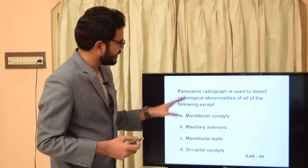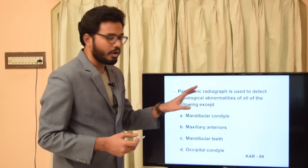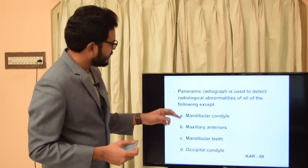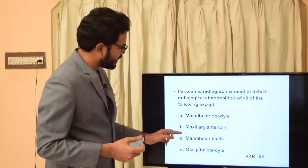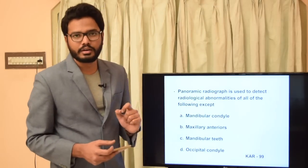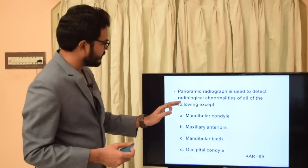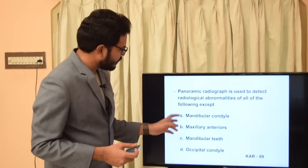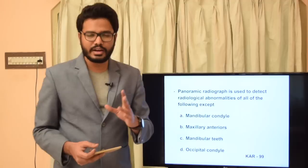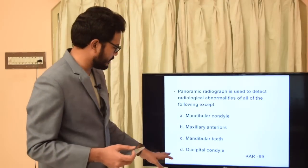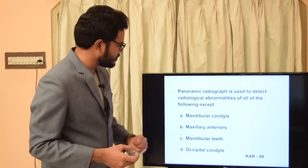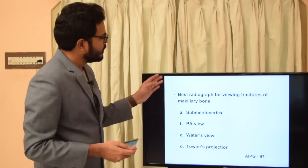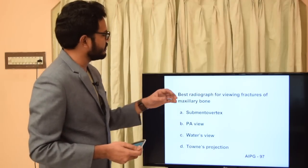Next question: panoramic radiograph is used to detect radiological abnormalities of all of the following except — (a) mandibular condyle, (b) maxillary anteriors, (c) mandibular teeth, or (d) occipital condyle. In a panoramic radiograph we can visualize the mandibular condyle, maxillary anteriors, and mandibular teeth, but not the occipital condyles. Option D is the appropriate answer.